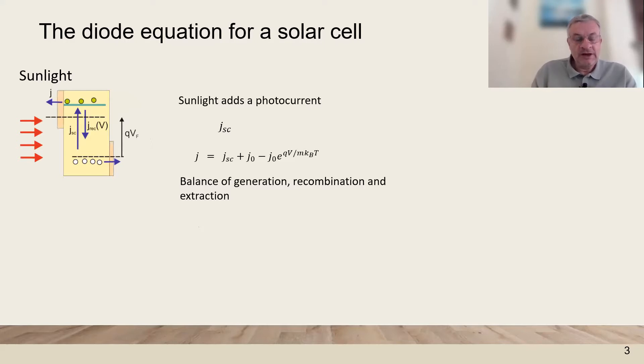When light is added to the system it generates an additional photocurrent, the short circuit current, and we obtain the full equation of the solar cell as a function of the voltage.